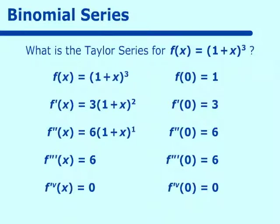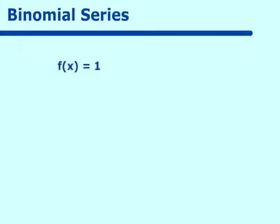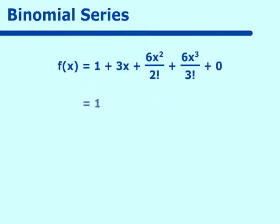Putting this into our Taylor polynomial, we get f(x) equal to 1 plus 3x over 1 factorial plus 6x squared over 2 factorial plus 6x cubed over 3 factorial, plus 0. Computing this gives 1 plus 3x plus 3x squared plus x cubed, which is certainly the expansion for (1 plus x) cubed using the binomial theorem.